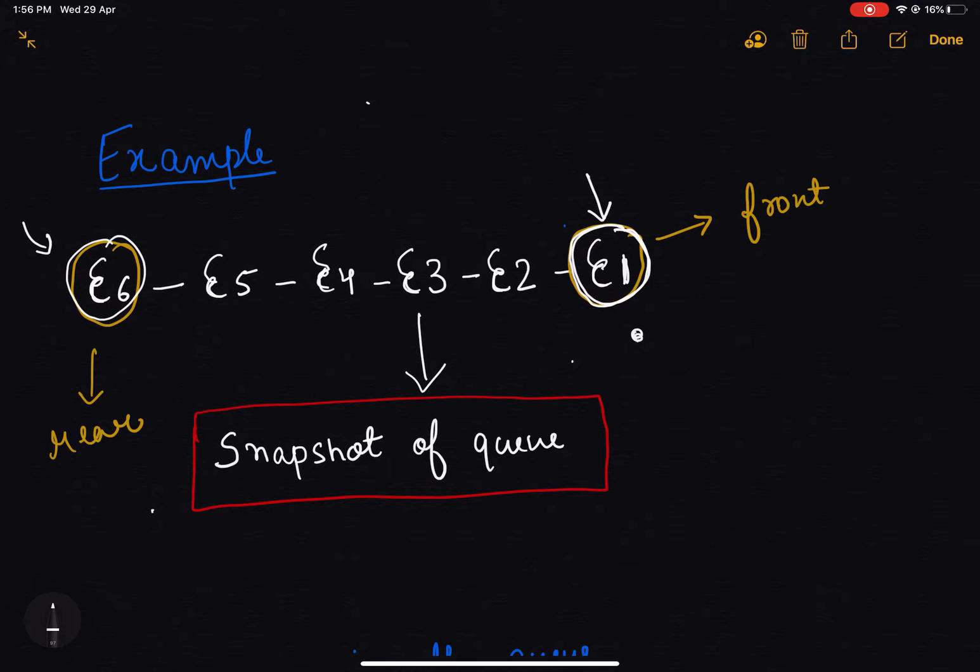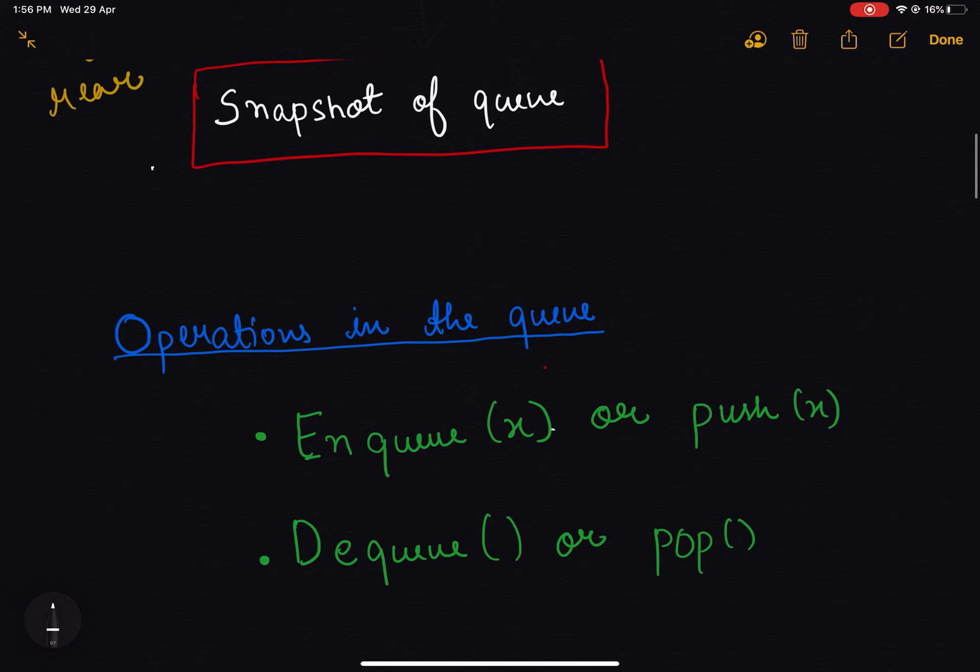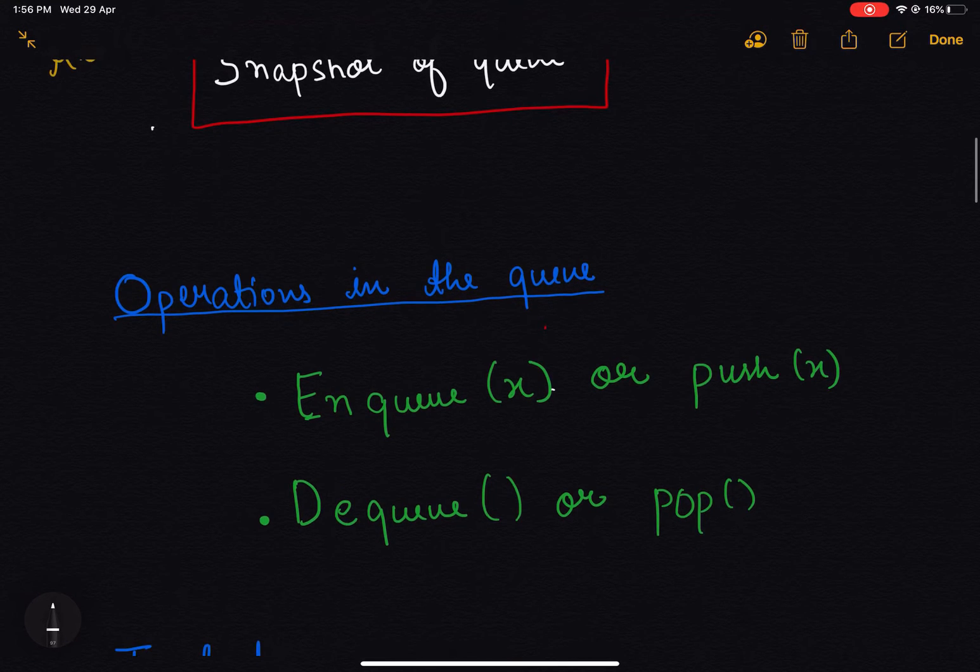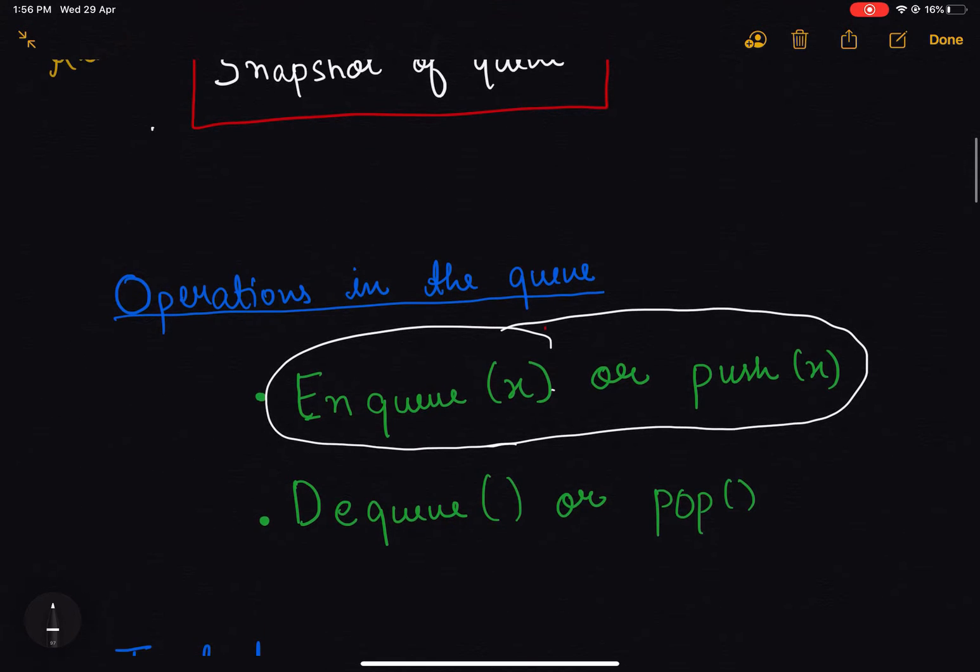Let's discuss operations in the queue. If we want to create a queue, what sort of operations do we need to support? The first operation is insertion, which we call enqueue in terms of queue, or we can also say it as push operation. And also we need to support dequeue, where we remove one element from the queue or pop an element from the queue.